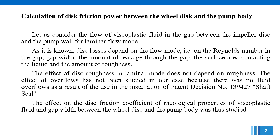Calculation of disk friction power between the wheel disk and the pump body. Let us consider the flow of viscoplastic fluid in the gap between the impeller disk and the pump wall for laminar flow mode. As it is known, disk losses depend on the flow mode, on the Reynolds number in the gap, gap width, the amount of leakage through the gap, the surface area contacting the liquid, and the amount of disk roughness.